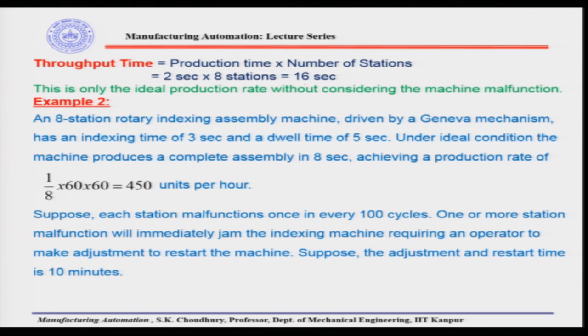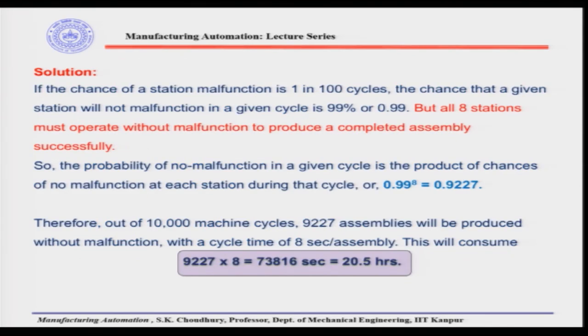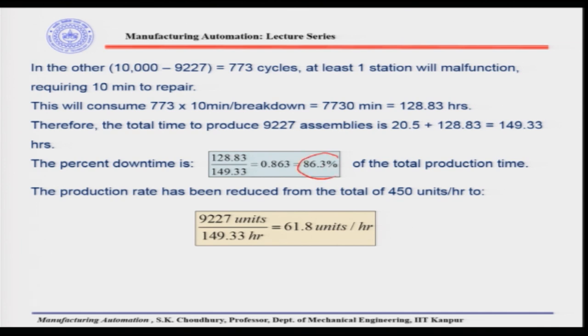In an example, we saw that if we want to consider the actual average production rate, it will be very high if we do not consider line breakage in the case of automated assembly in the production flow line. We saw that if we have 450 units per hour ideally, then for one malfunction in 100 cycles, we are actually getting the percentage downtime as 86.3 percent, which is very high.